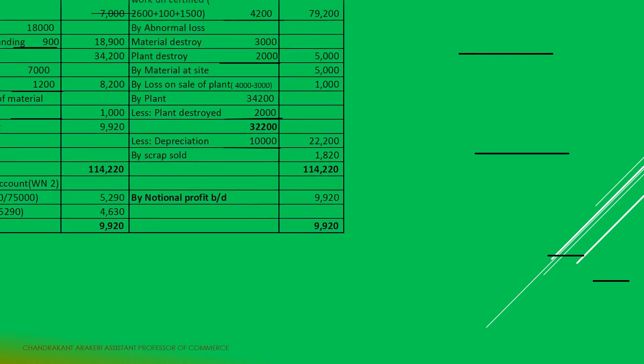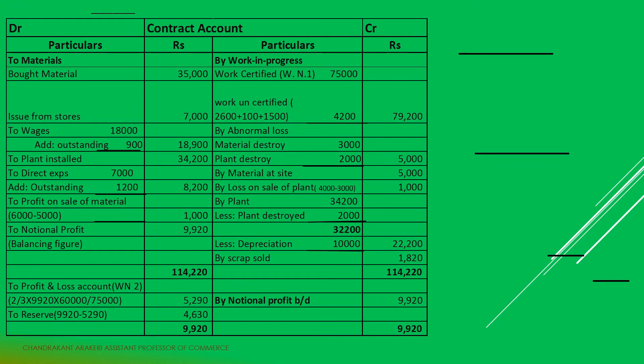In this slide, we will go for the solution. Dear students, kindly put the contract account format — debit side and credit side, particulars and rupees on each side. The first item given in the problem is material bought directly. Material is shown on the debit side of the contract account under materials: bought material Rs. 35,000.